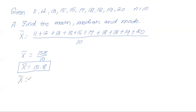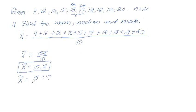Now for the median, since there are 10 observations and 10 is even, we are going to have two middle values. 10 divided by 2 is 5, so the 5th and 6th observations are our two middle values. To find the median when n is even, we add the two middle values and divide by 2. So our median is 16.